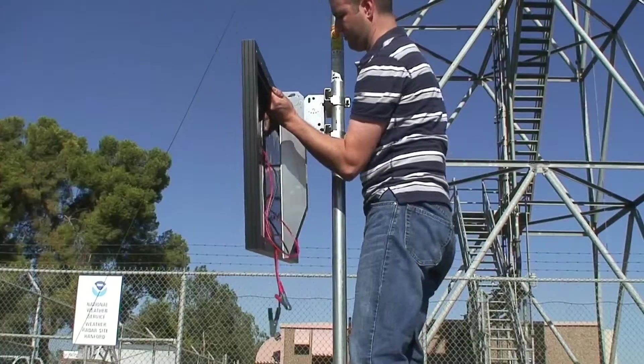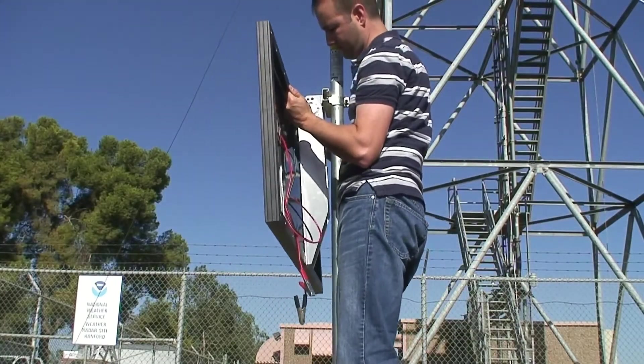At this point we're ready to attach the solar panel to the mast using the hardware supplied in the mount kit.